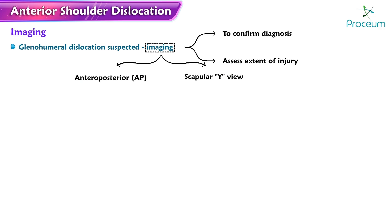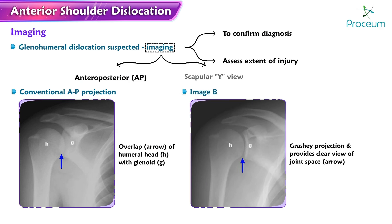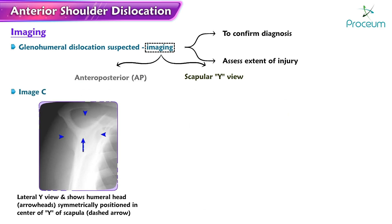In the standard radiography series, a conventional antero-posterior projection shows an overlap of the humeral head with the glenoid. A Grashey projection provides a clear view of the joint space. The lateral Y view shows the humeral head symmetrically positioned in the center of the Y of the scapula.